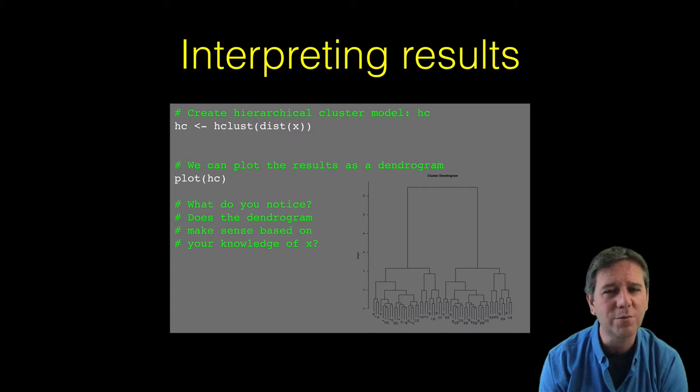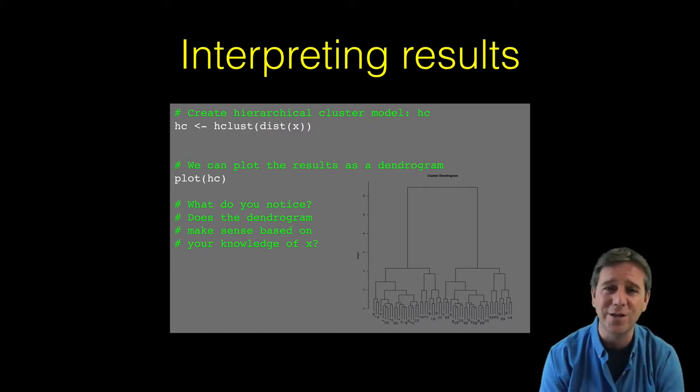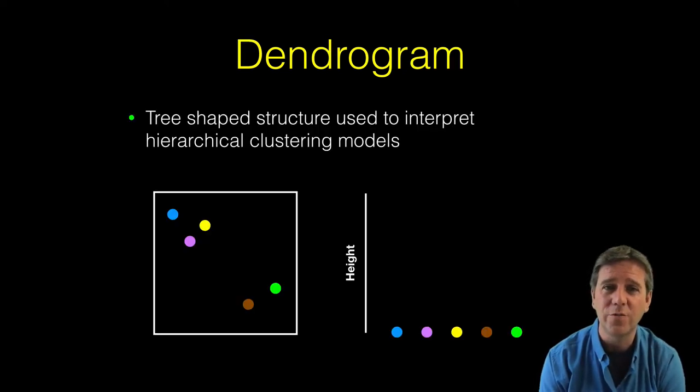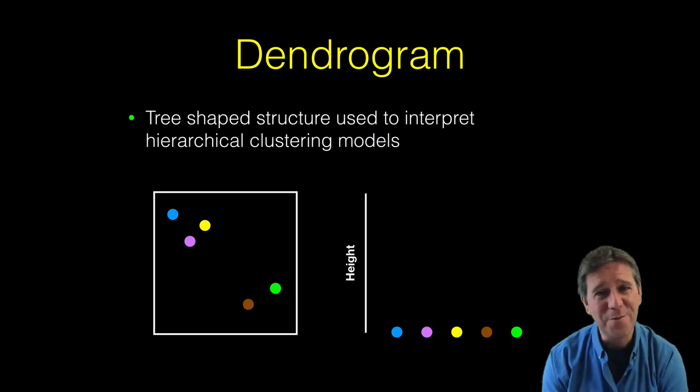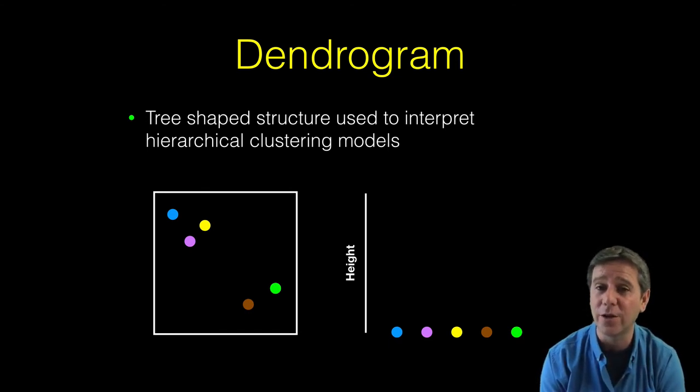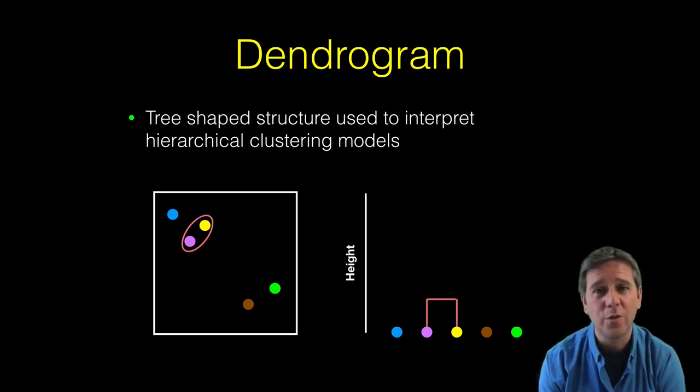Before we delve into them, let's figure out where this tree comes from. It displays results of the hierarchical clustering approach. Let's return to the bottom with our five points. I'm showing here in addition to the points in our 2D plane, the tree that's going to build up on the right. We merge points or clusters to form new clusters in this approach.